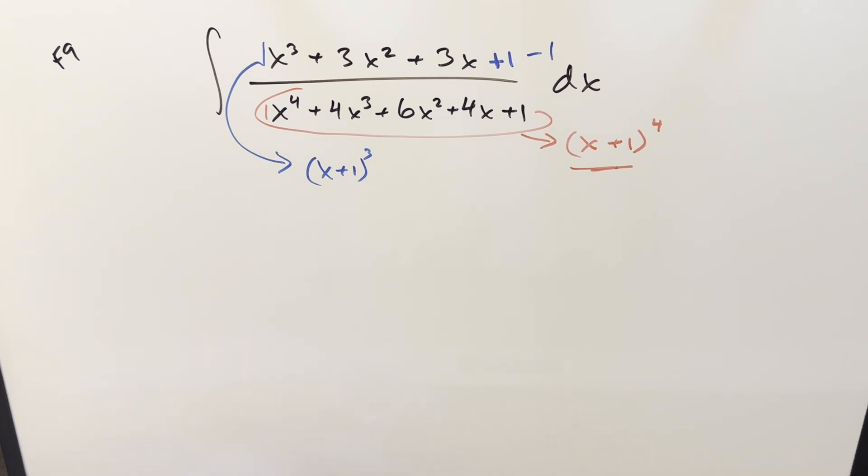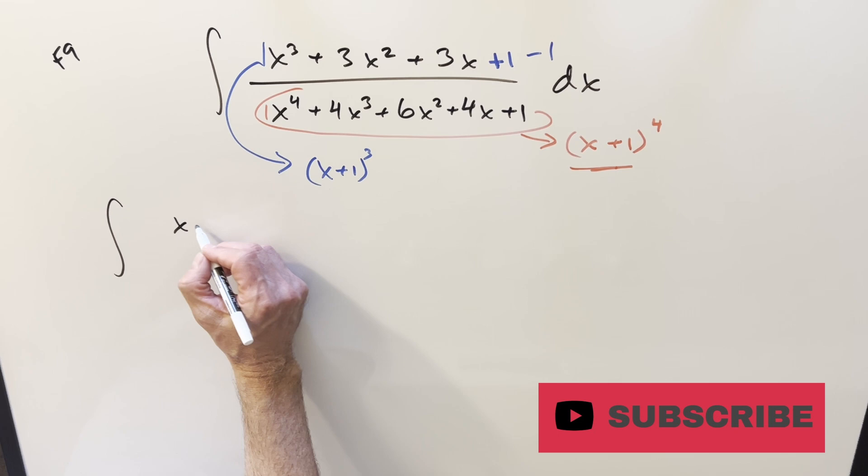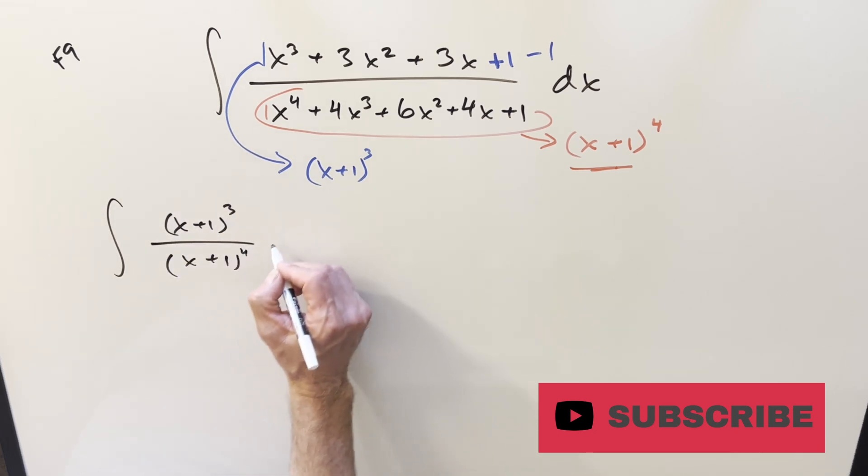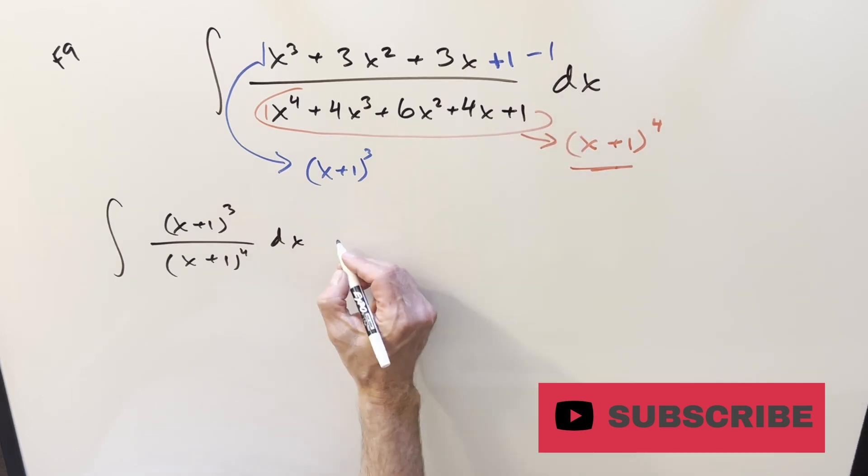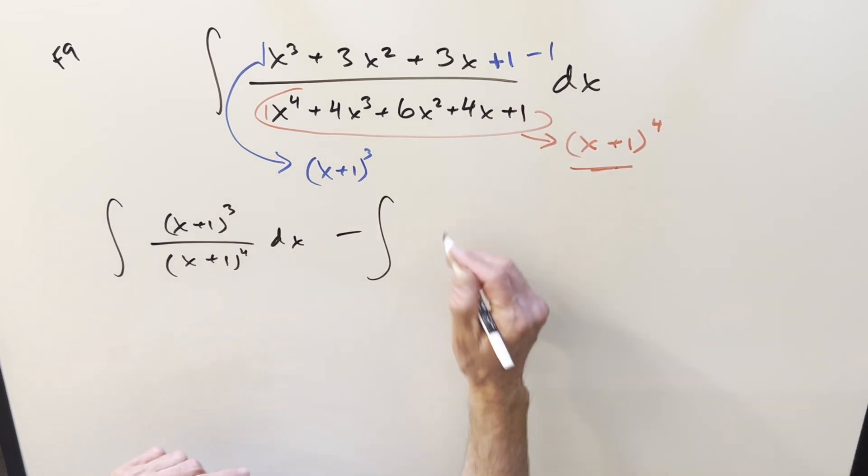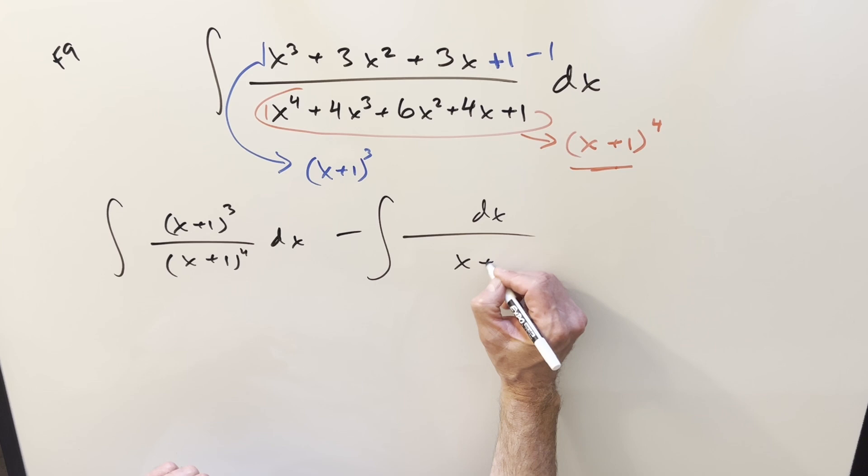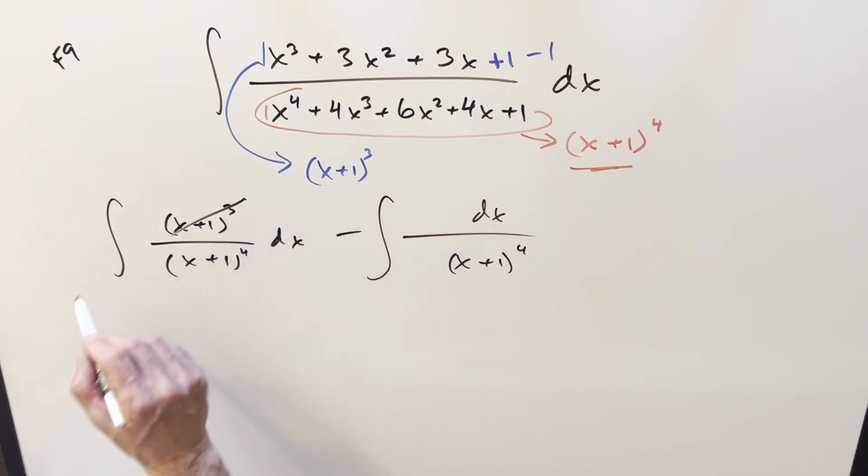But then we can split it up into two integrals. For the first integral, it's just going to be (x+1)³ over (x+1)⁴ dx. And then for the second one, we'll have it as dx over (x+1)⁴. But then over here, I can cancel three of these with three of these, and we just have 1 over (x+1). So that's an easy integral. It's just going to be natural log absolute value x+1.